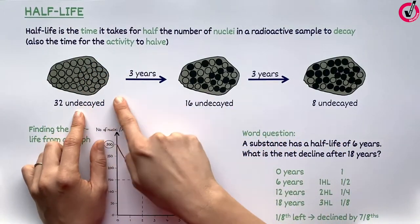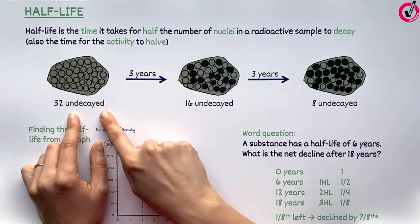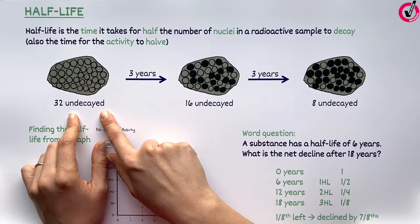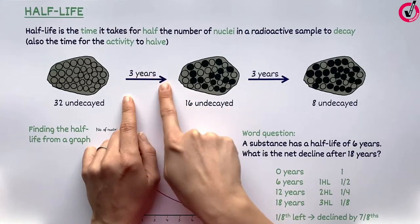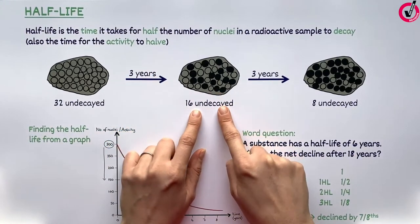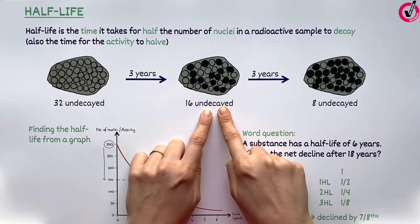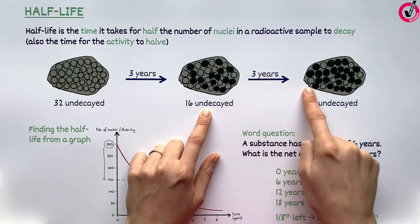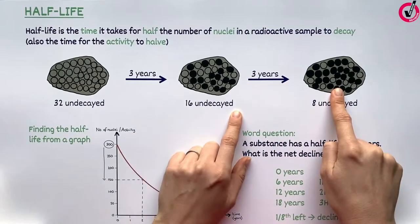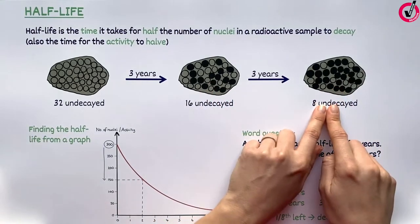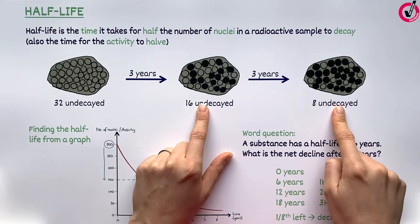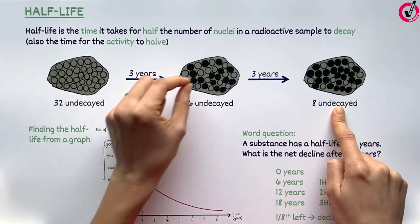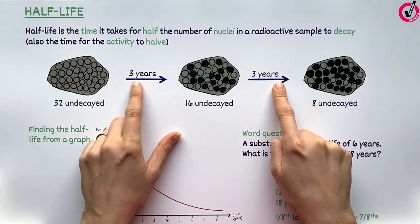So, if I have a piece of radioactive material — let's say it has 32 unstable atoms in it — after a certain amount of time, for example three years, half of them will have decayed. After another three years, half of the ones that are left will have decayed too. So we've gone from 32 to 16 to 8. It's gone down by half every three years, so its half-life is three years.